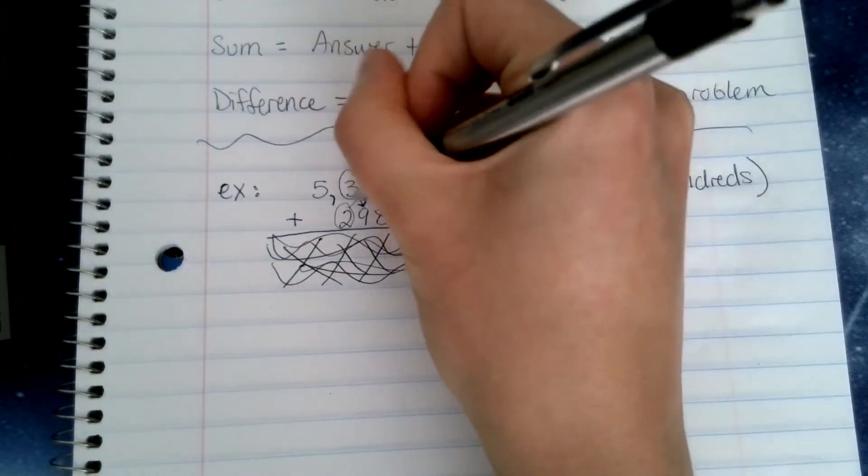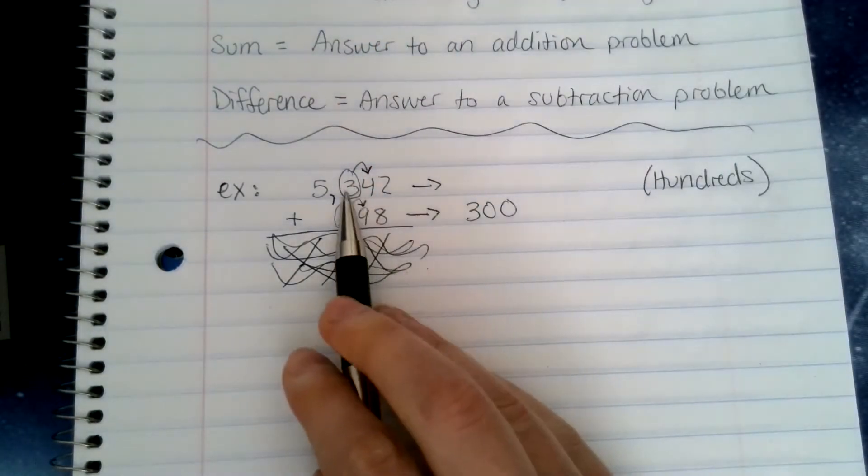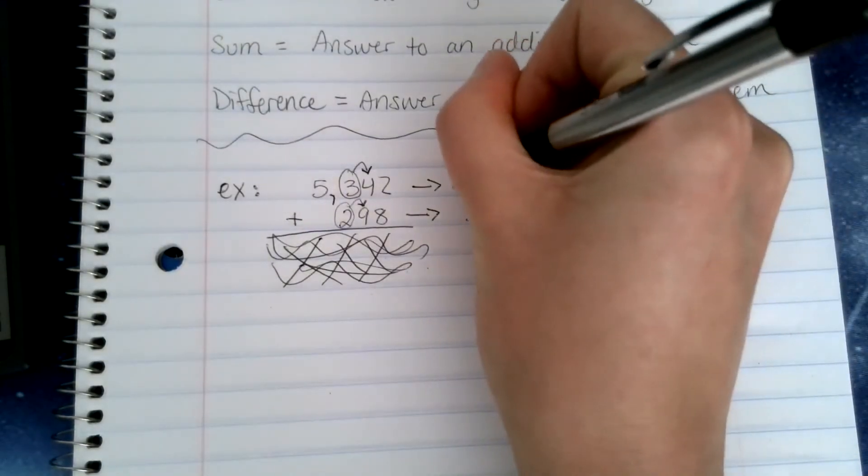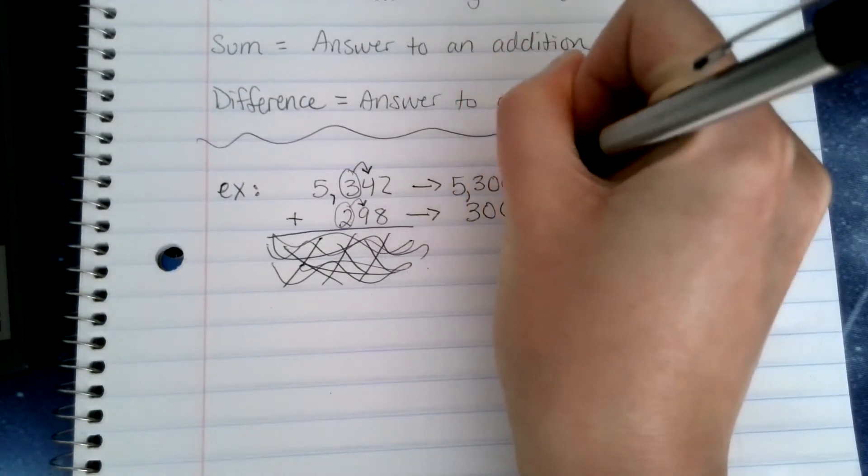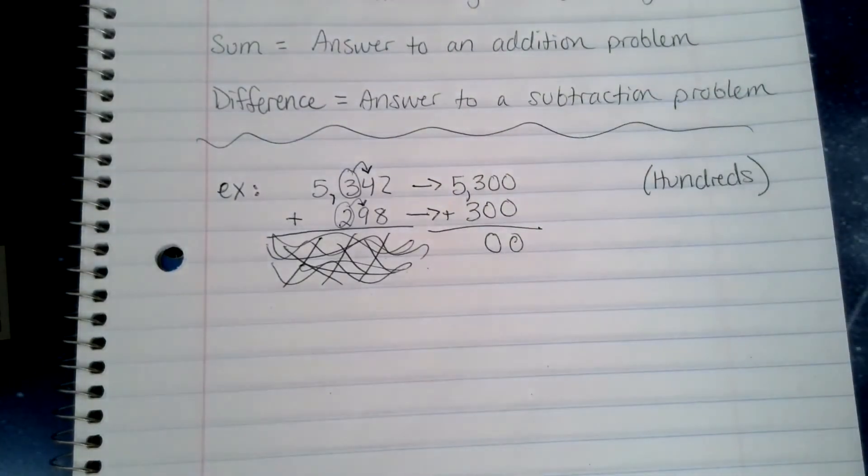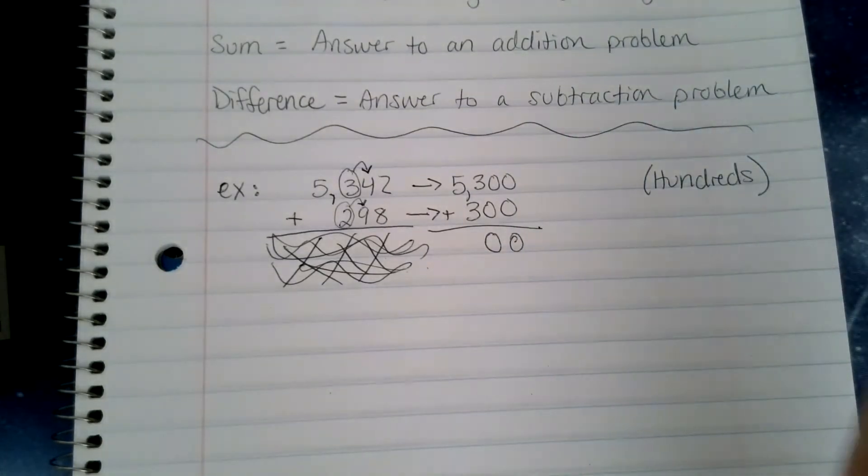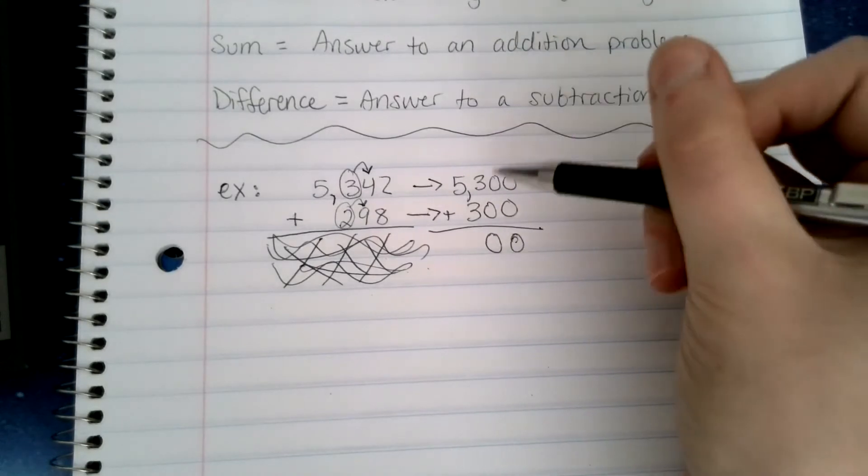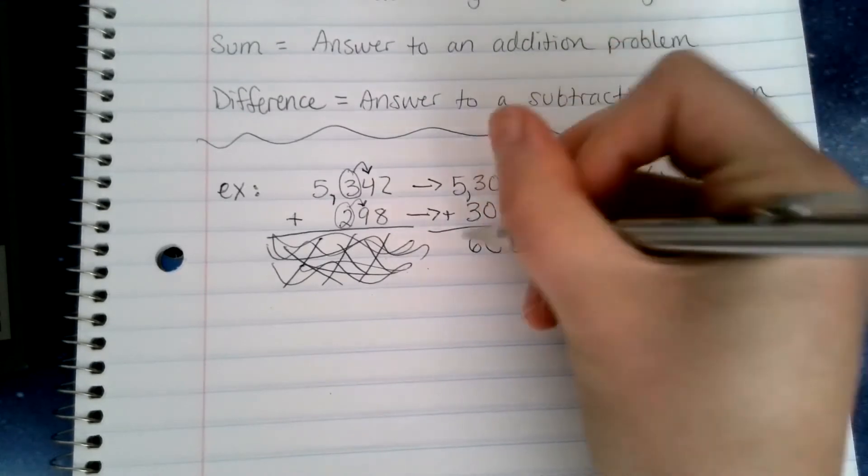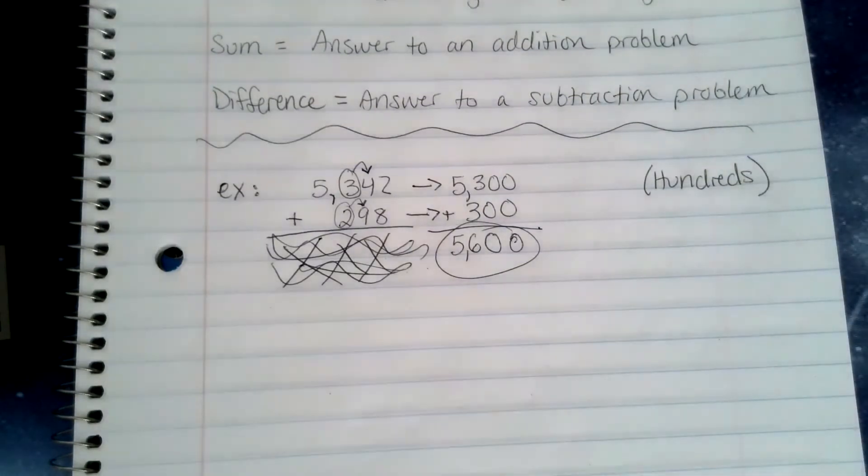So I found the hundreds place and I looked next door. It looks like it's four or less, so the three will stay a three. Still bring over your five though, keep the three, everything else becomes zeros. Now when I add, I'm going to have a real easy time with the first few place values because they're all zeros, and zero plus zero is nothing, right? So I'm going to do that really quick, then I'll start with my digits that I have, which is three plus three, that's six, and then bring down the five. So my estimated answer for this problem is 5,600.